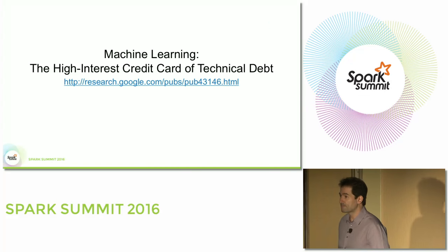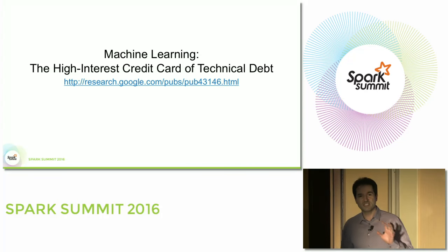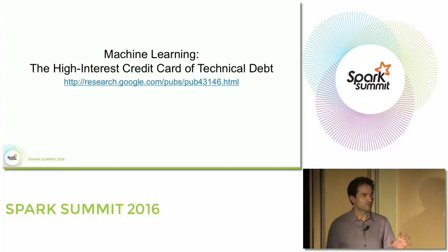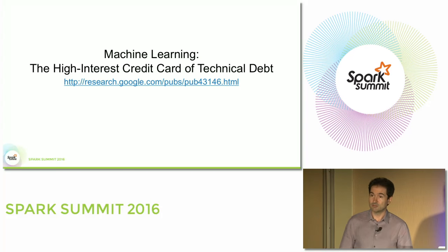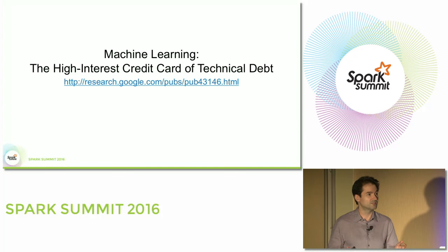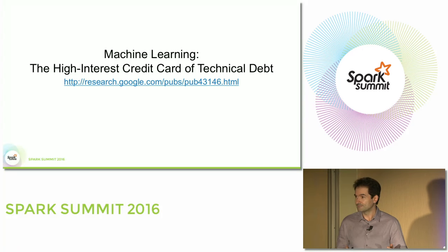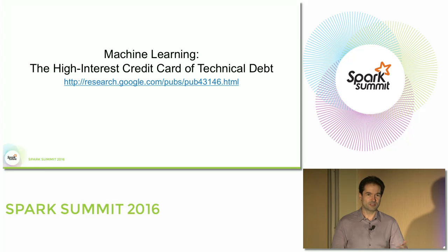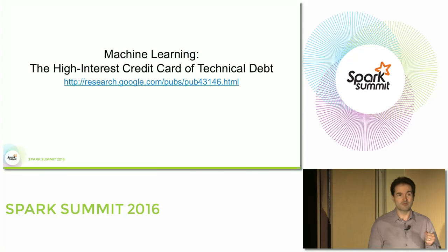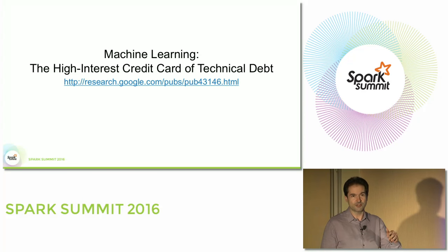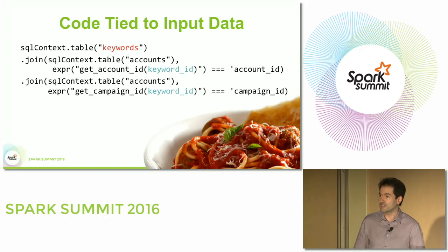Google actually published a paper about it. The problem exists in traditional data analysis and exploration, but it's especially a big problem if you're doing machine learning. Most of machine learning — for those of you who practice it — has to do with feature engineering. The training is not that hard; the hard part is feeding the right thing into training, then tuning and evaluating results. I highly recommend this paper to anyone doing data engineering for machine learning or data science, because it talks about this problem of accumulating technical debt.